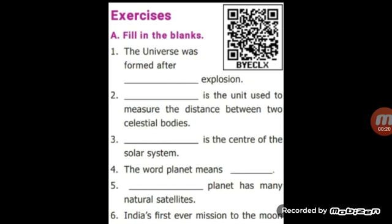Next, dash is the unit used to measure the distance between two celestial bodies. Answer: Light year. Next, dash is the center of the solar system. Answer: Sun.